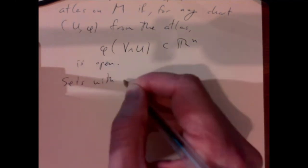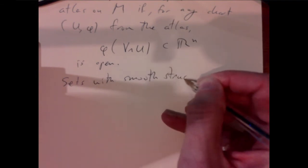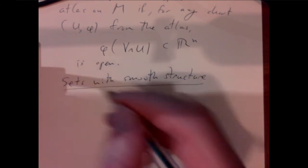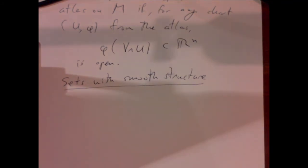From now on we want to think about a set with smooth structure as the basic objects — candidates for what we might call a manifold. They locally look like an open set in Euclidean space, and when going from one local description to another, they vary by a smooth change of variables. So they're intuitively like smooth objects with a notion of calculus. However, there are going to be problems, and we'll have to throw out some of them. Three problems can arise: variable dimension, not being Hausdorff, and having too many open sets.